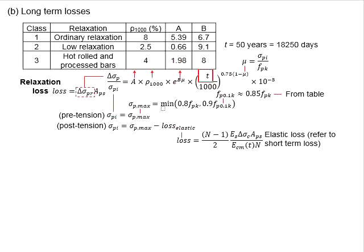There is another factor of μ. This μ is determined as the ratio of the stress in the tendon divided by the fpk, which is the characteristic strength of the tendon. It represents the degree of utilization of the stress for the prestressing purposes.